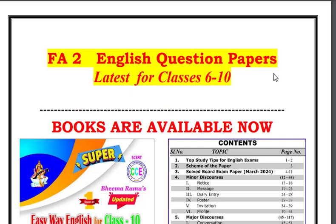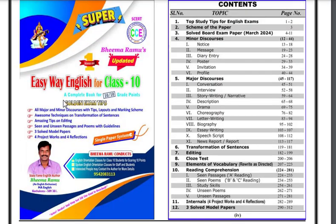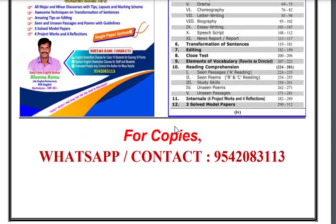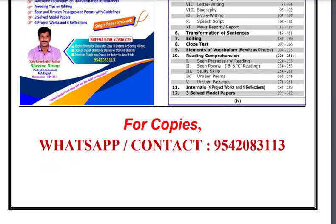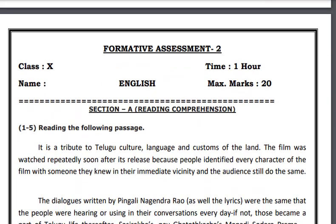Here we are going to take a quick look at FA2 English question papers, latest papers prepared for classes 6 to 10. This is Easy Way English for class 10, it's a sensational book. This course is grammar — it has everything. If you want these copies, you can WhatsApp for more details.